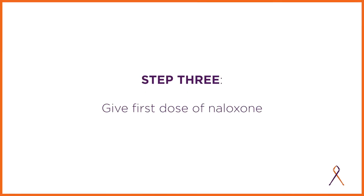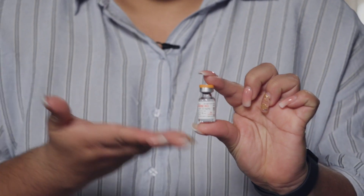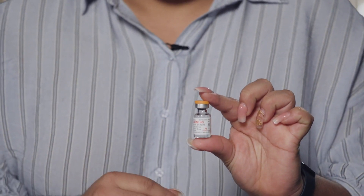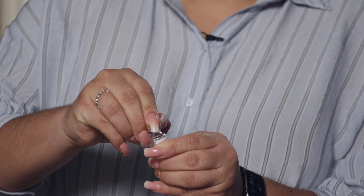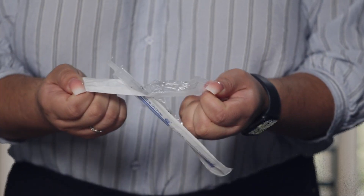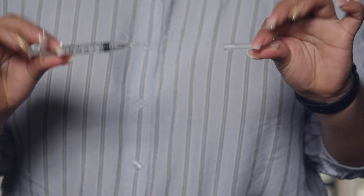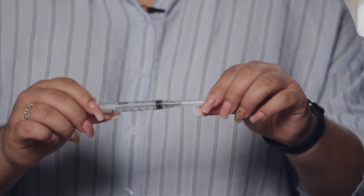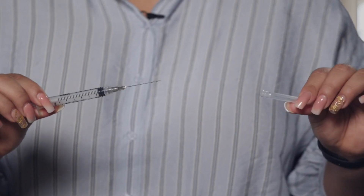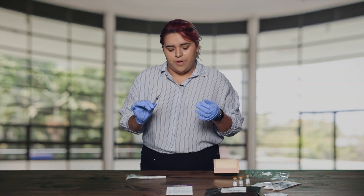Get your naloxone ready. We're showing you the IM intramuscular injection form of naloxone — it comes with a vial and a syringe. Each vial has an orange cap that you will need to remove by popping it off with your thumb or pulling it with your nails. Open up the syringe and take it out of the wrapper. To remove the safety cap, pull it straight off — if you try to twist or turn it, you might remove the needle. Hold the syringe firmly in one hand and pull the safety cap with your other, setting it down so you can recap the syringe after administering the injection.